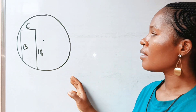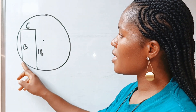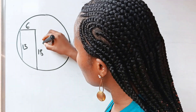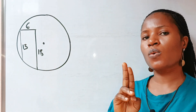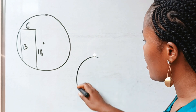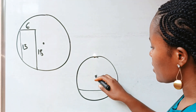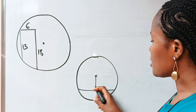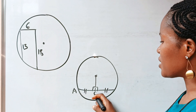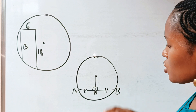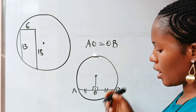First of all, this is the center of the circle and this is a chord. If from here to here is 13 — even though this is not drawn to scale — if I draw a straight line from the center to meet this chord, it divides the chord into two equal parts and a right angle is formed. So if the center meets the chord at point O, then AO equals OB.